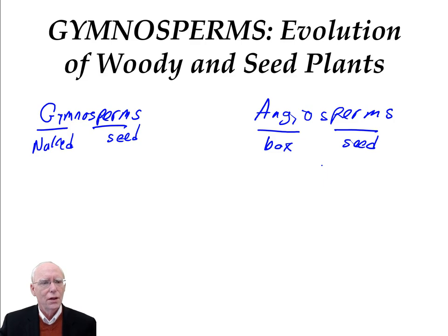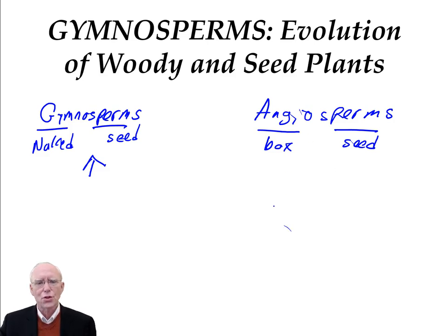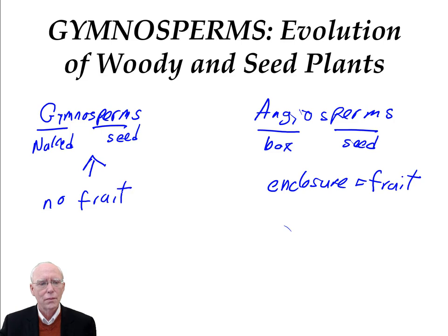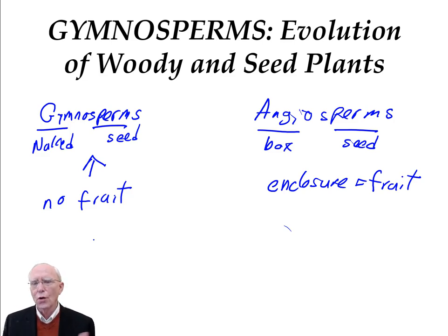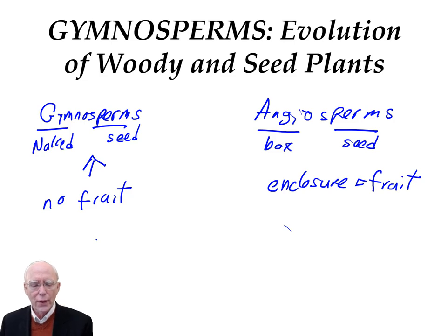We'll look at the angiosperms in more detail later. The naked-seeded plants are the seeds which do not have a secondary enclosure around them. That secondary enclosure around the angiosperms is the fruit. So the fruit surrounds the seed. In the gymnosperms, there is no fruit. A gymnosperm that you know is a pine tree, and the pine tree doesn't have fruit — it's got cones. This lecture is about the gymnosperms, the naked-seeded plants.